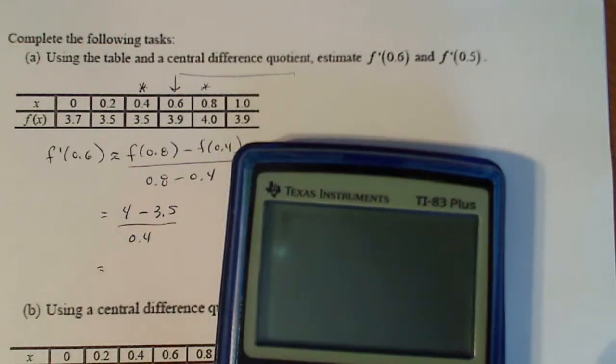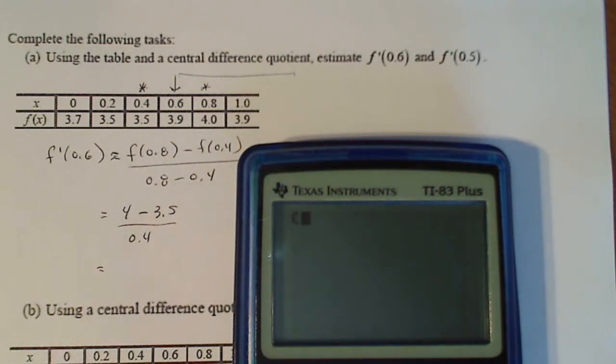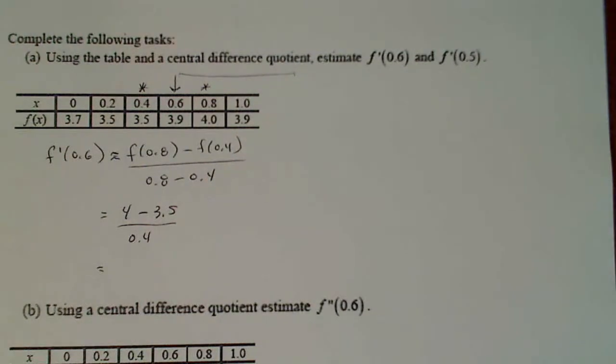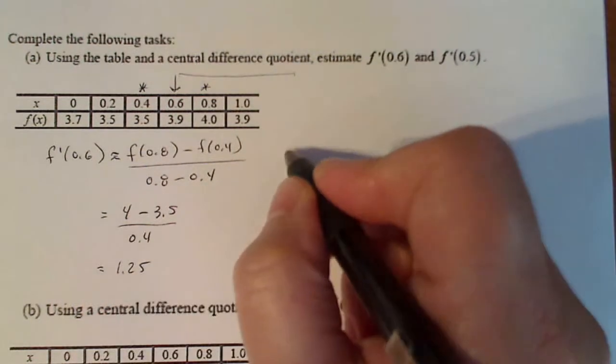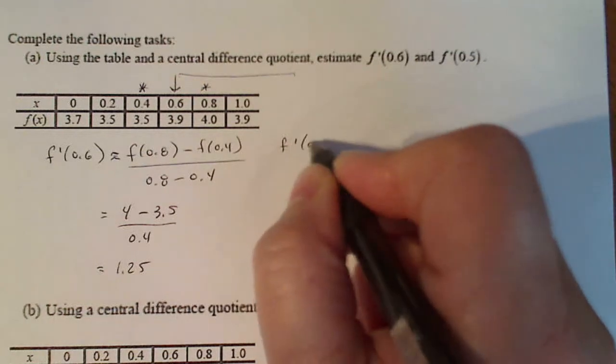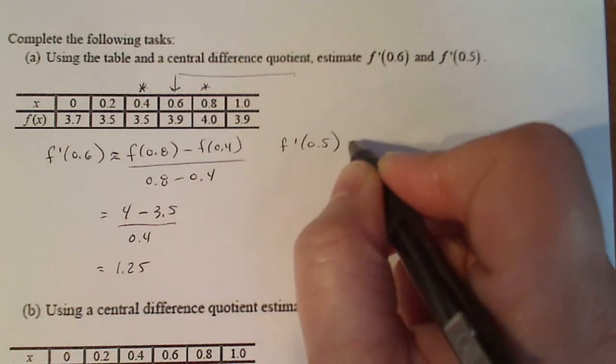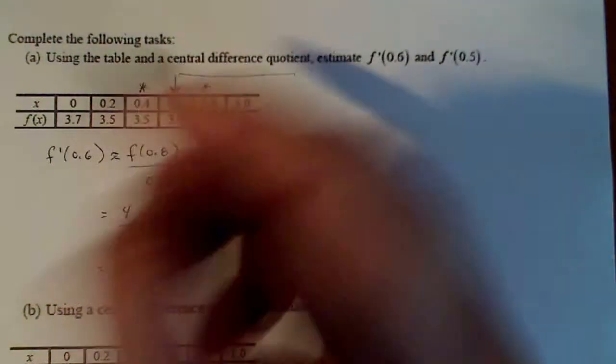And 0.8 minus 0.4 is 0.4. So that number there turns out to be, get my machine over here, 4 minus 3.5 divided by 0.4, 1.25.